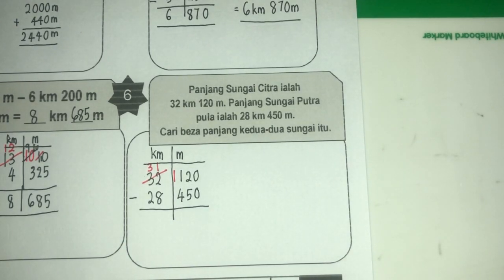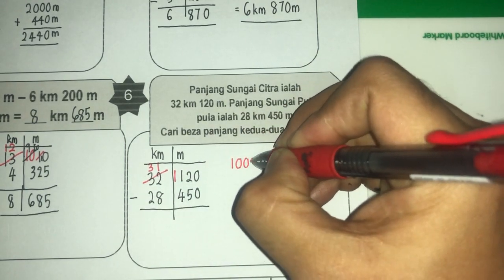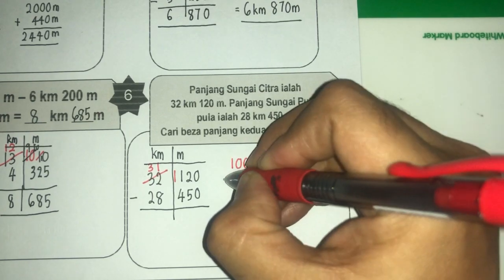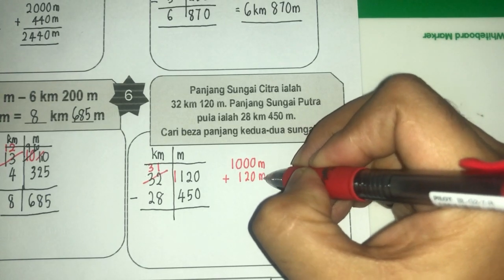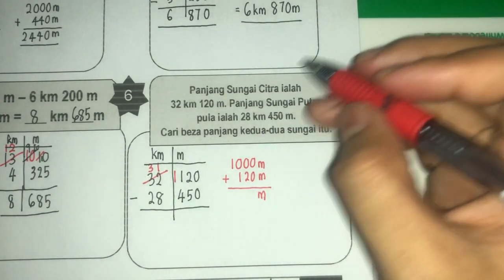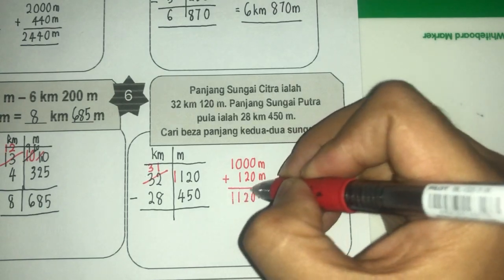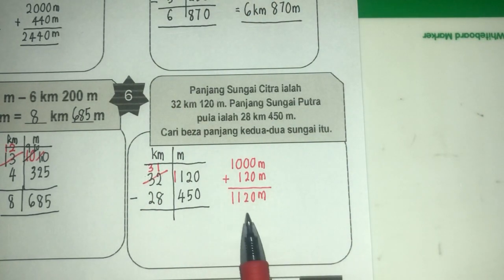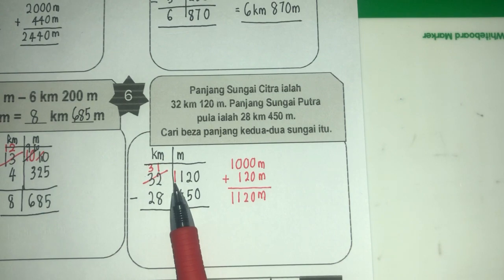Congak je terus. Kalau rasa tak berani nak congak, buatlah macam ni untuk murid yang slow sikit, yang rasa tak jelas. Tapi kalau murid yang cerdik, pandai congak, tak payah buat benda ni — terus congak je. Nampak tak? 0, 2, 1, 1 — seribu seratus dua puluh. Sama kan? Sebab cikgu congak. Kalau awak tak keti nak congak, buatlah macam ni dulu untuk selamatkan awak.